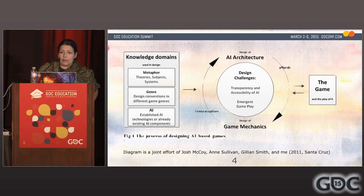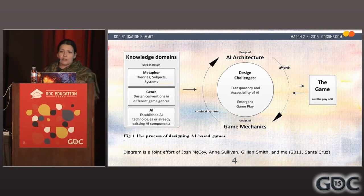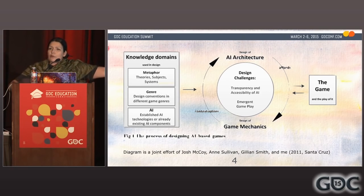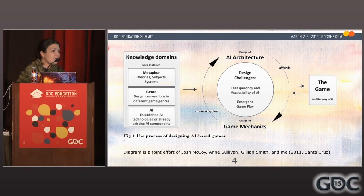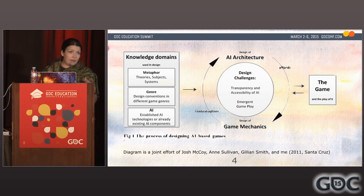Back in 2011, I was spending a lot of time in Santa Cruz, having lots of good discussions with some of my favorite collaborators — Josh McCoy, Gillian Smith, and Ann Sullivan. We started to compare how we work with AI and design, and we could see commonalities. We usually looked at three different knowledge domains: one rich metaphor of a system like personality psychology or social behavior, some existing AI technology or whatever we were building, and the type of genre we were adhering to in our development.